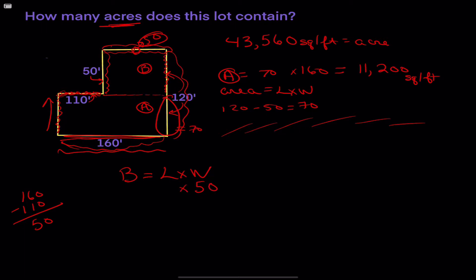And the length, once again, is how tall it is. And we know that's 50. So 50 times 50 is going to give us the area of B. And B equals 2,500 square feet.